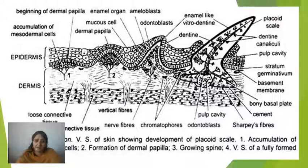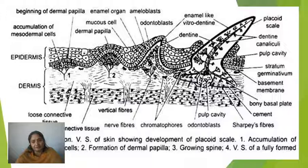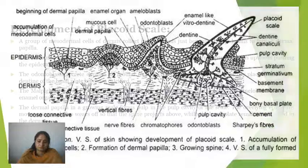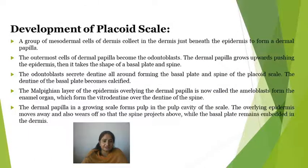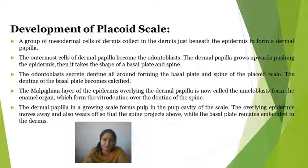The vitrodentine formed is an enamel-like material but not truly enamel. Vitrodentine and dentine are formed, and then the Placoid scale is completely developed. The pulp cavity is open, through which many nerves and blood vessels enter. You can see the epidermis from outside and the basal plate is present in the mesodermal area. A group of mesodermal cells of the dermis collects just beneath the epidermis to form a dermal papilla.